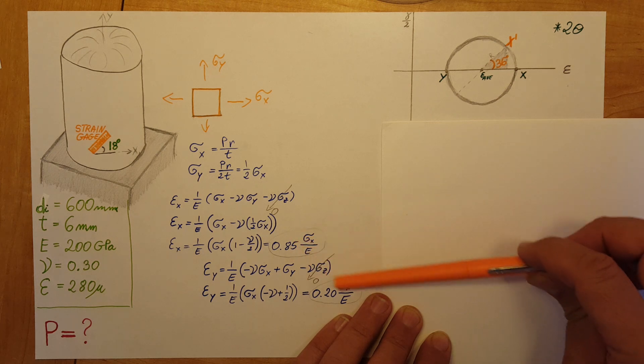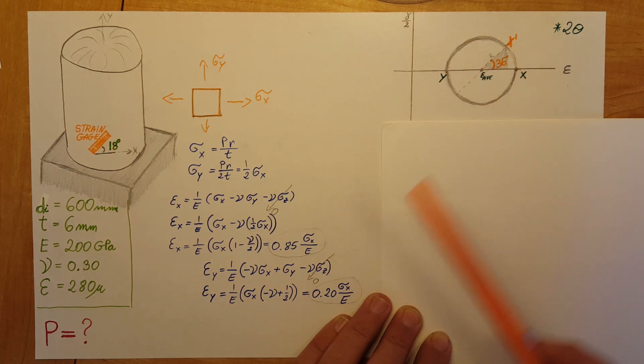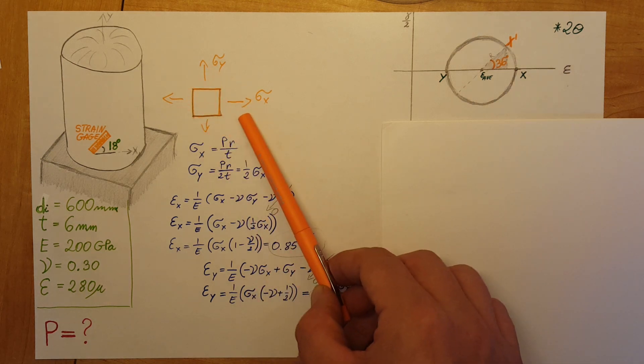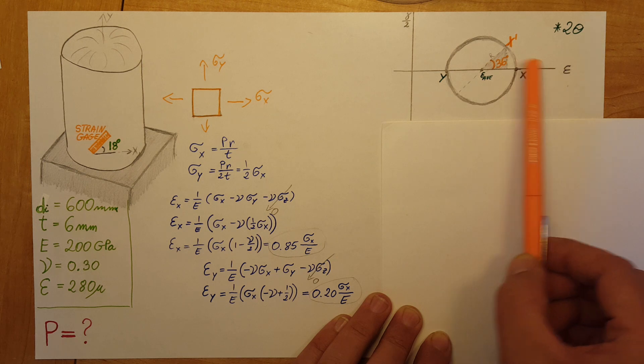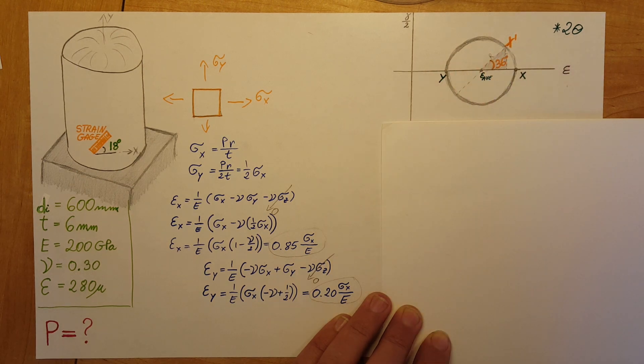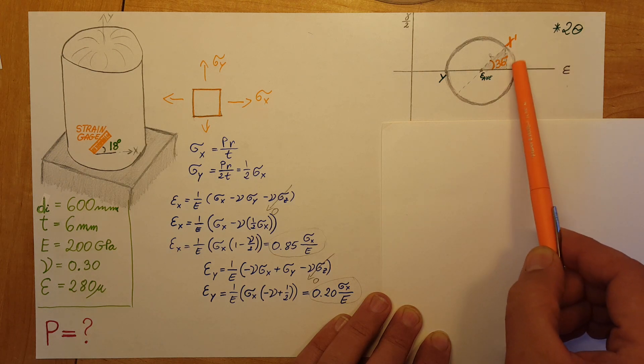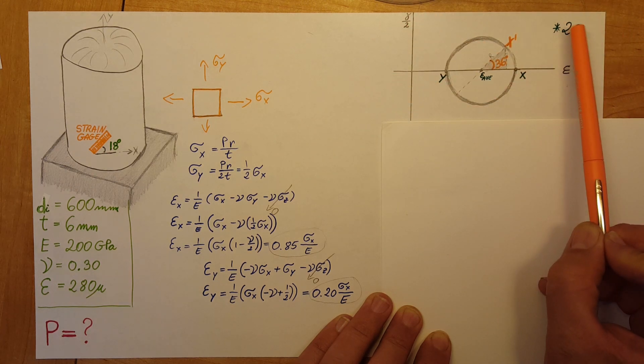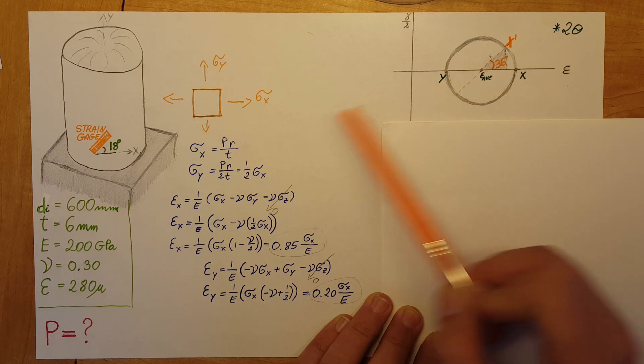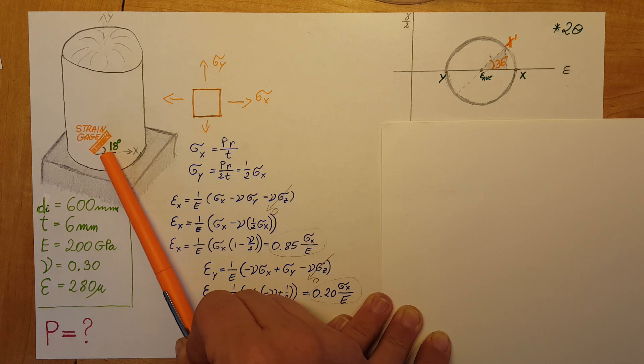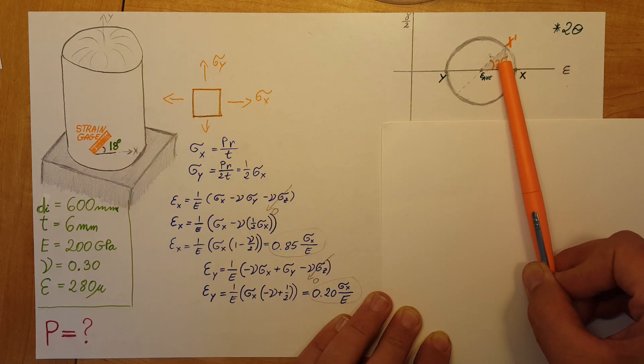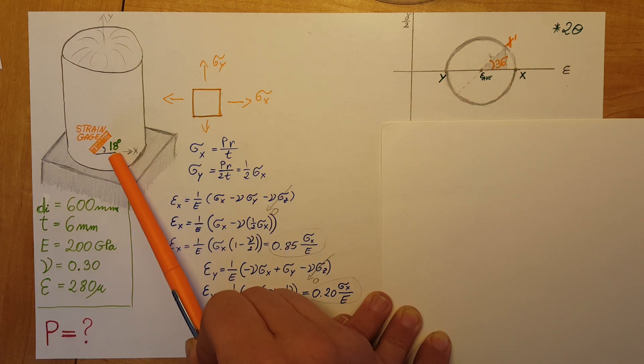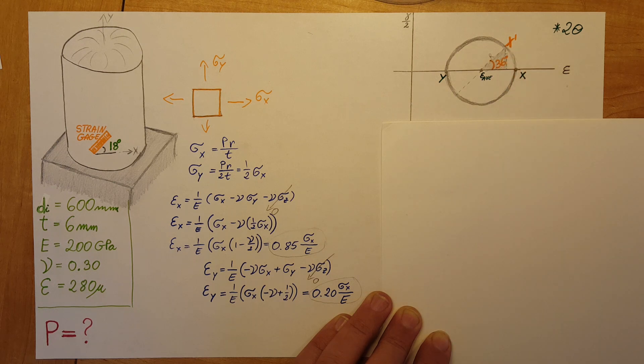I'm going to draw Mohr's circle for strain. Make sure your markings are correct—we have one over two for the shear and epsilon here. These two are my principal orientations x and y. As we discussed, we do not have any shear, and we can confirm this is principal orientation where shear is zero. Now we need to calculate our angle. When we go into Mohr's circle, we're dealing with 2 theta. We had 18 degrees in the real world, so in Mohr's circle we multiply by 2, giving us 36 degrees.